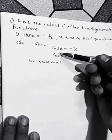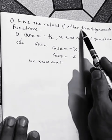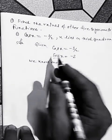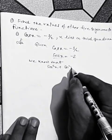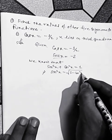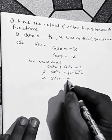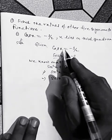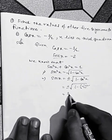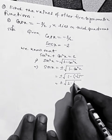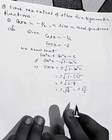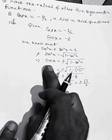I have found the first one, sec x. Now I need to find the other four. We know that sin²x + cos²x = 1, so sin x equals plus or minus the square root of 1 minus cos²x. Since cos x is minus half, sin x equals plus or minus the square root of 1 minus one-quarter, which gives plus or minus root 3 by 2. So we get two values of sin x.